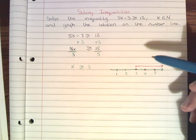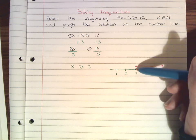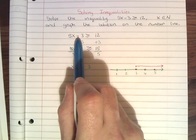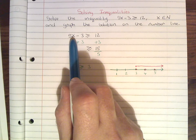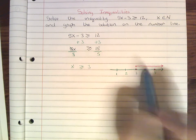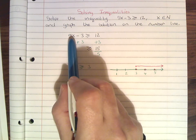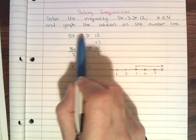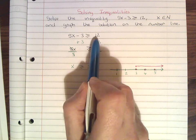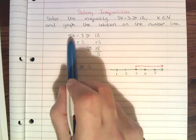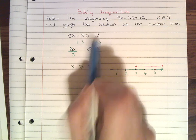We can verify this: substituting x = 3 gives 5 times 3 minus 3 = 12, which equals 12 — that works. Substituting x = 4 gives 5 times 4 minus 3 = 17, and 17 is greater than 12. So all values from 3 upward satisfy the inequality.